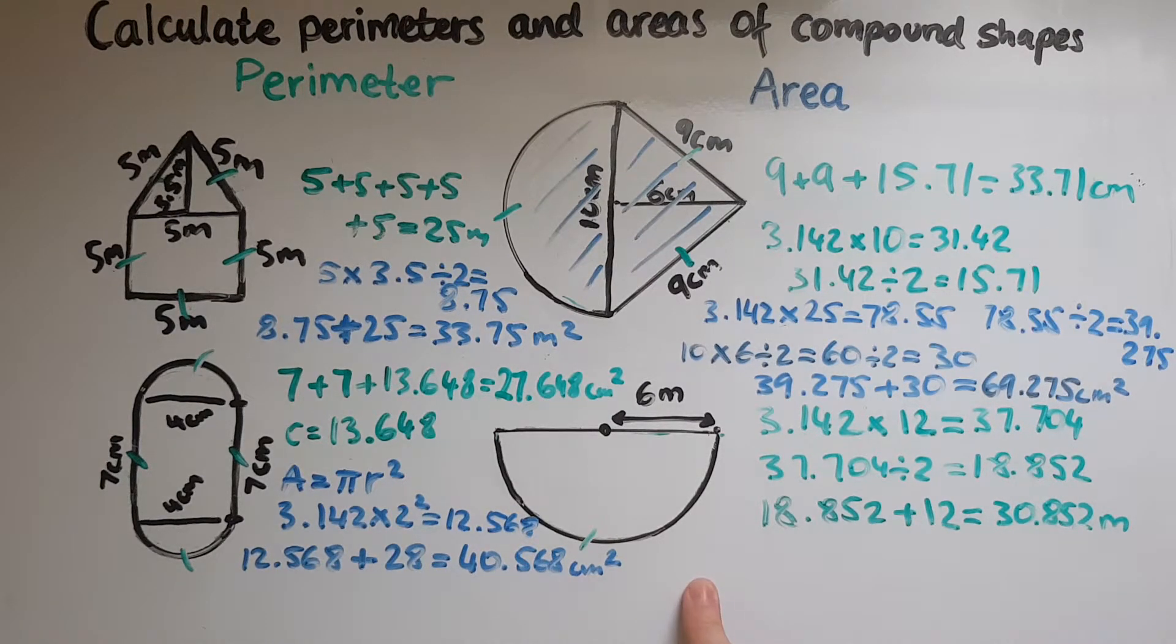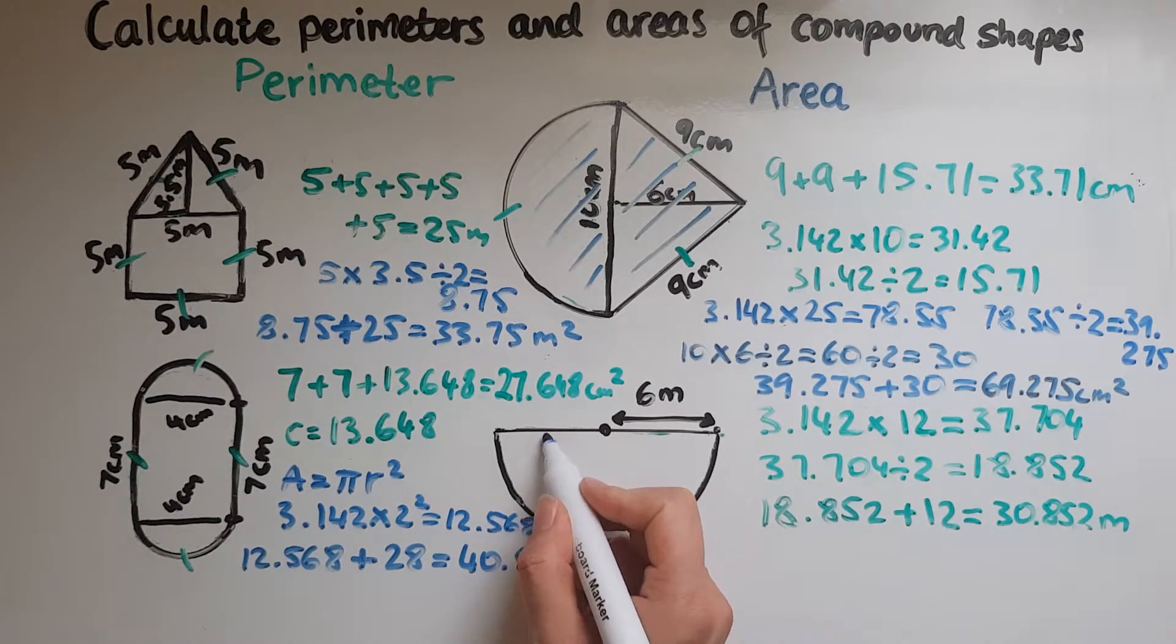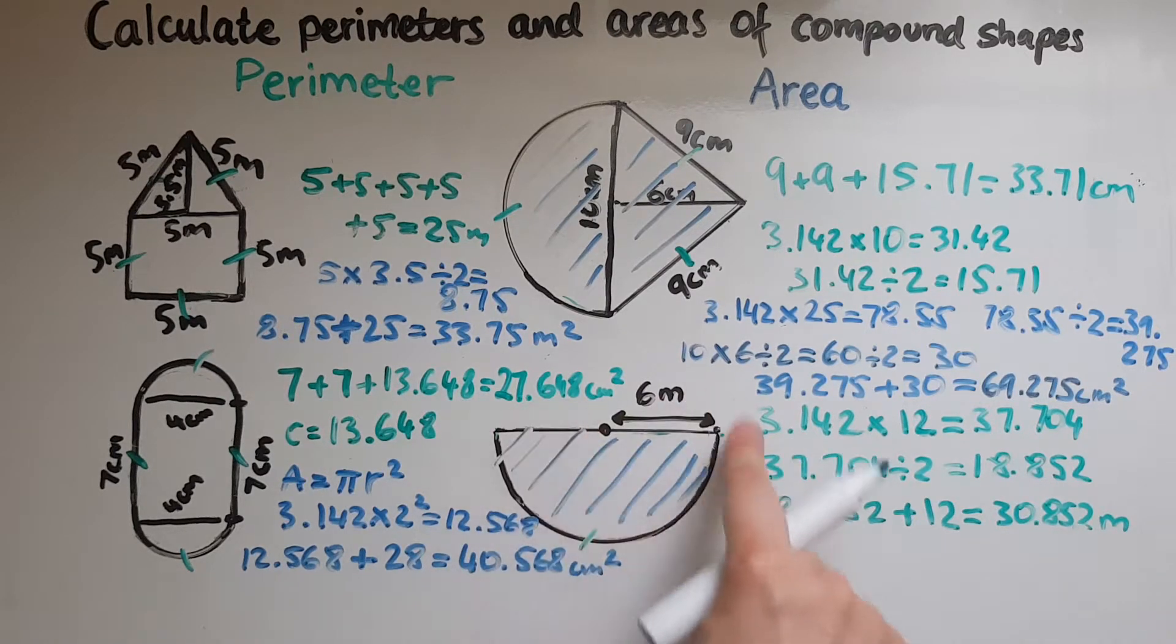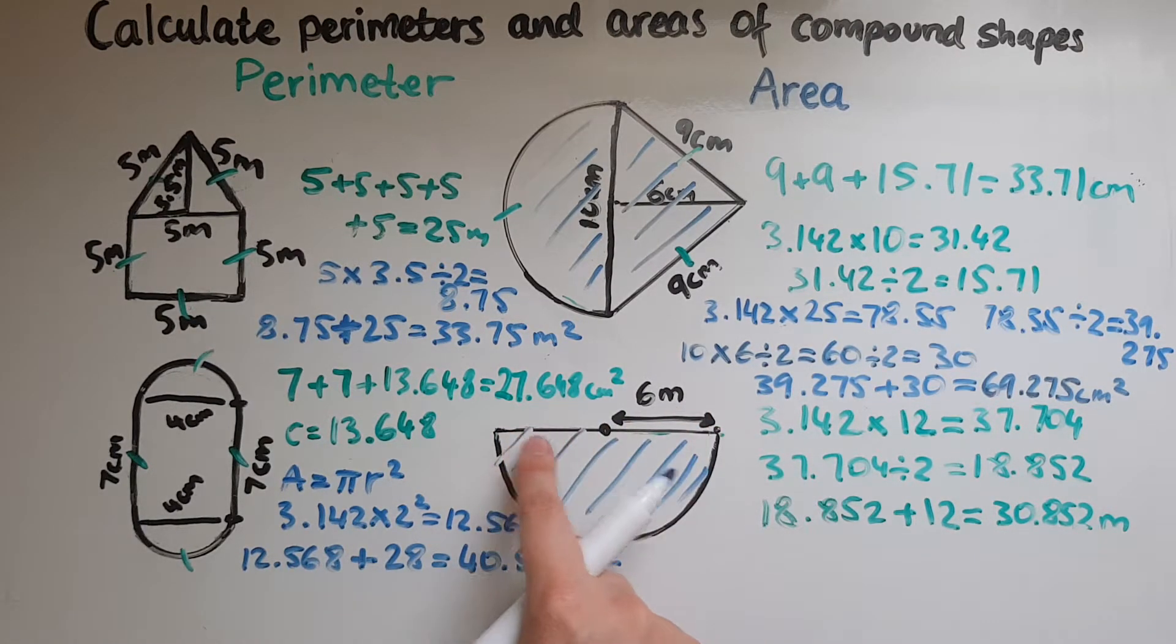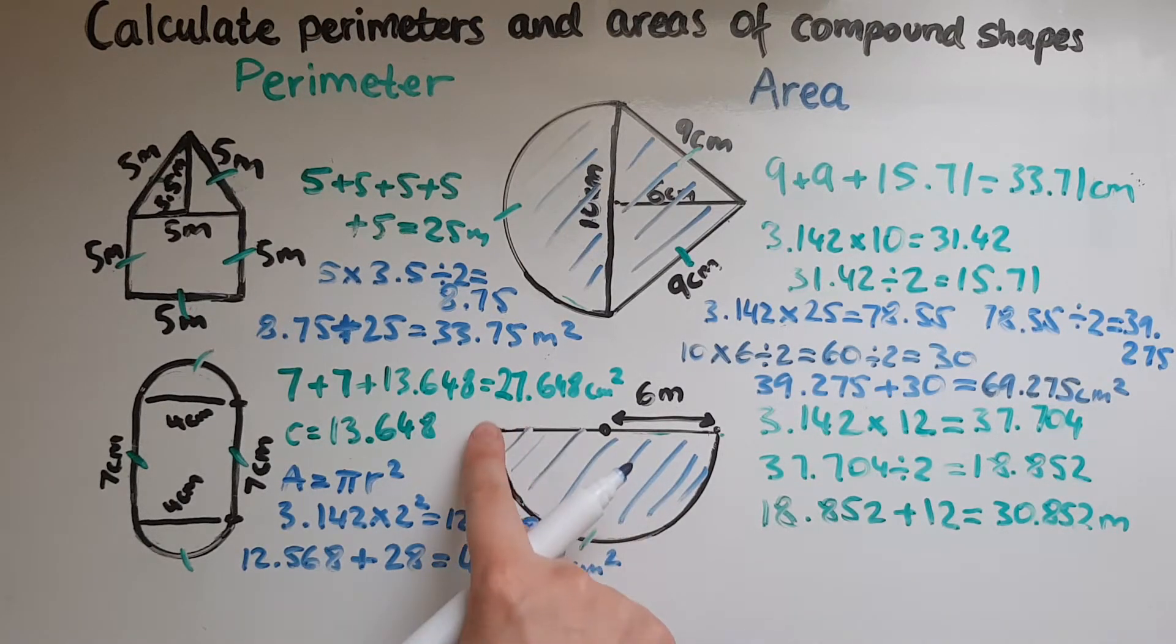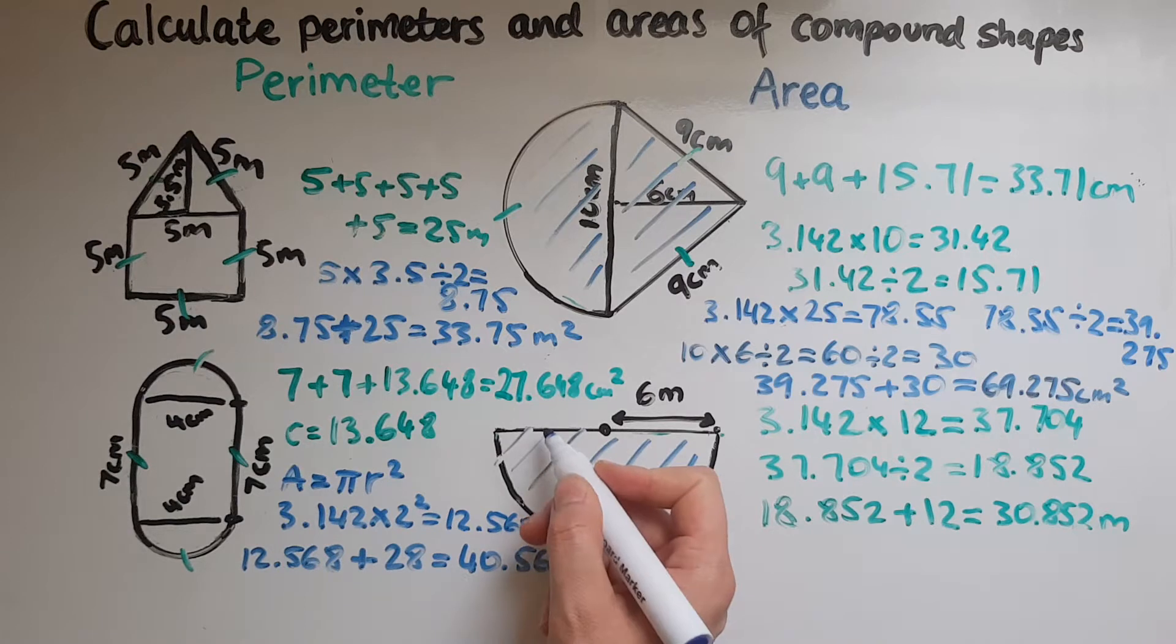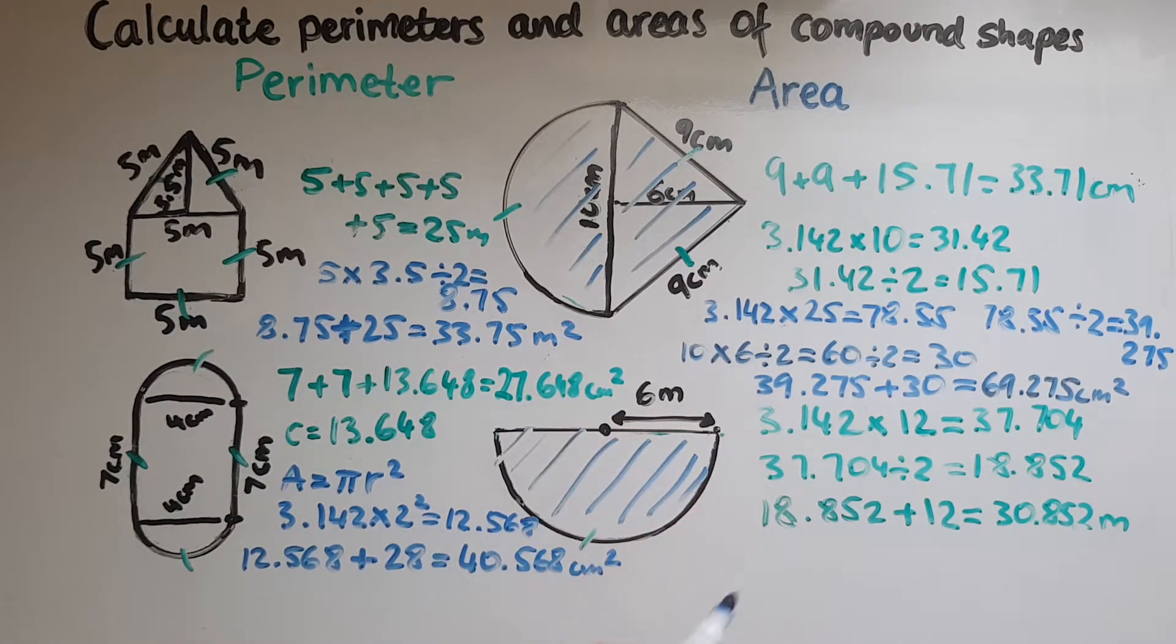Now looking at the final shape we've got half a circle. When we're looking at area we just look at the surface area, we're not looking at the outskirts. When we looked at perimeter we had to separately work out the circumference and then add that length, but in this case all we have to do is work out the area of the half circle.